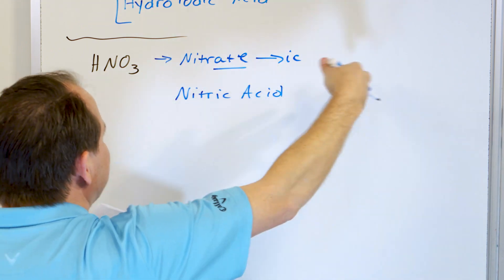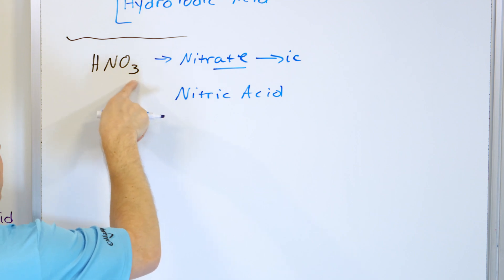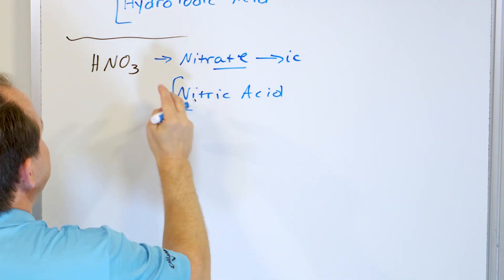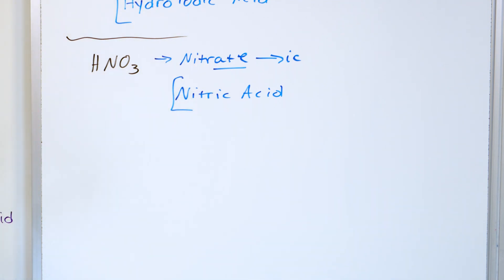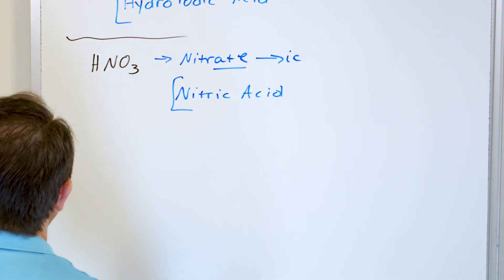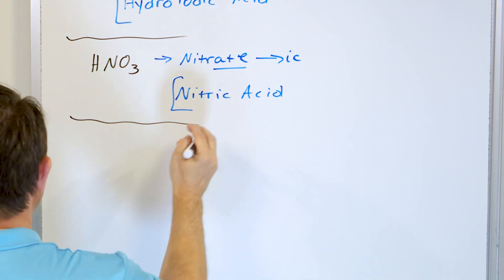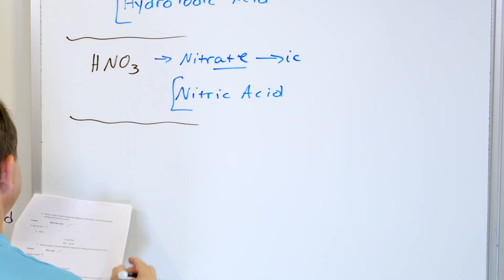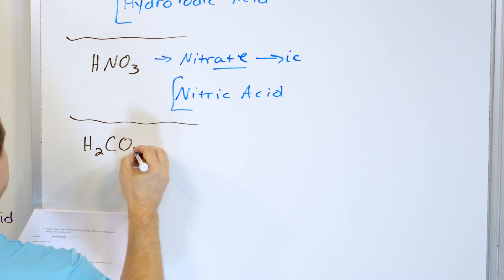Not hydro whatever whatever acid. Whenever it's a polyatomic, a more complex acid like this, it's just named purely based on the ion. In this case, nitrate becomes nitric acid. All right, next, let's take a look at H2CO3.